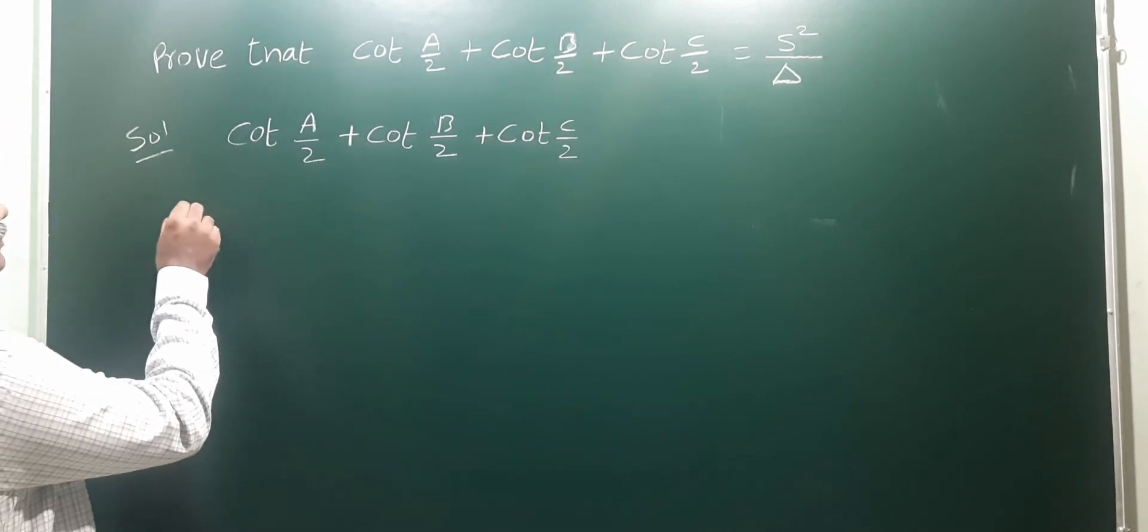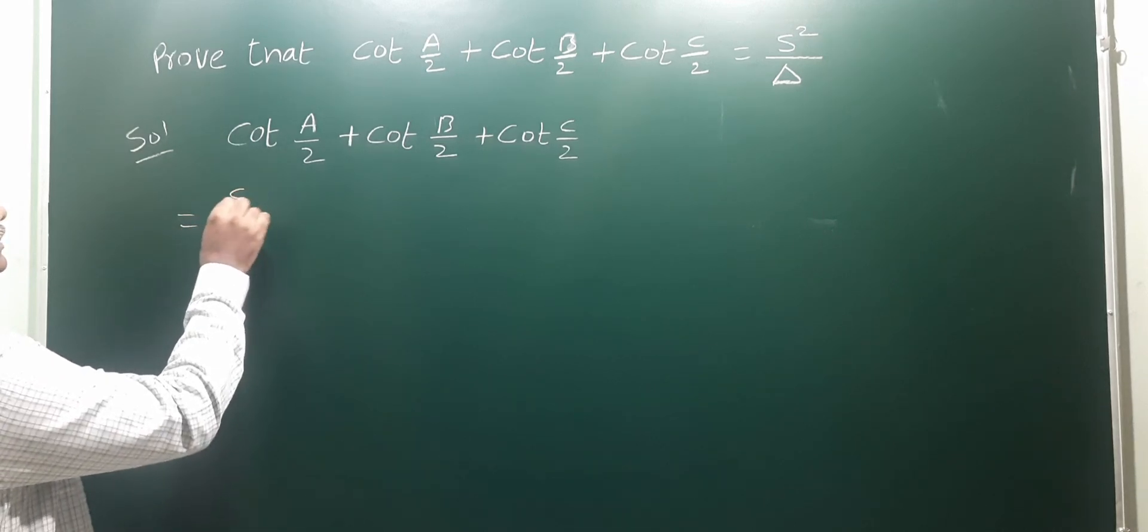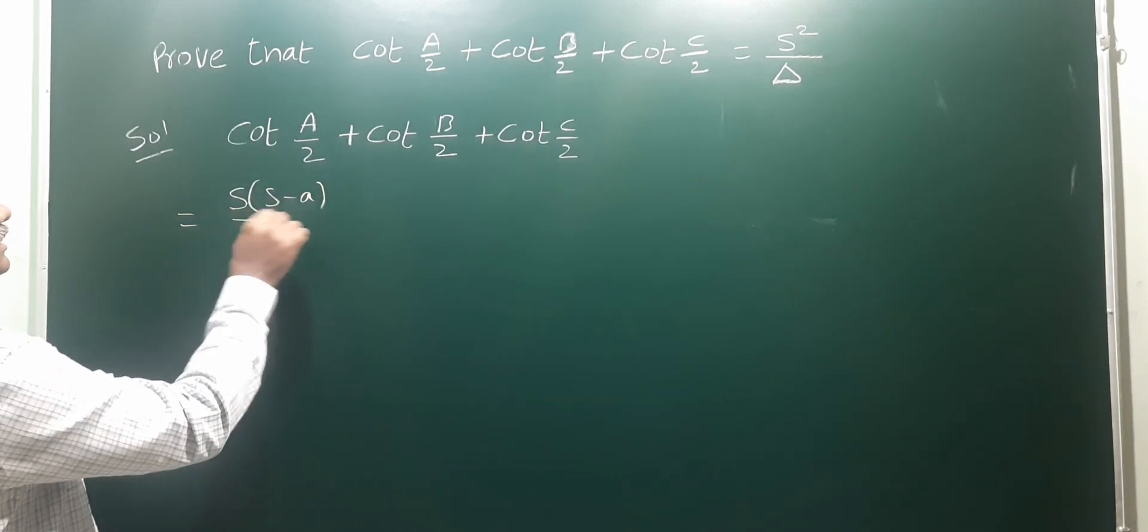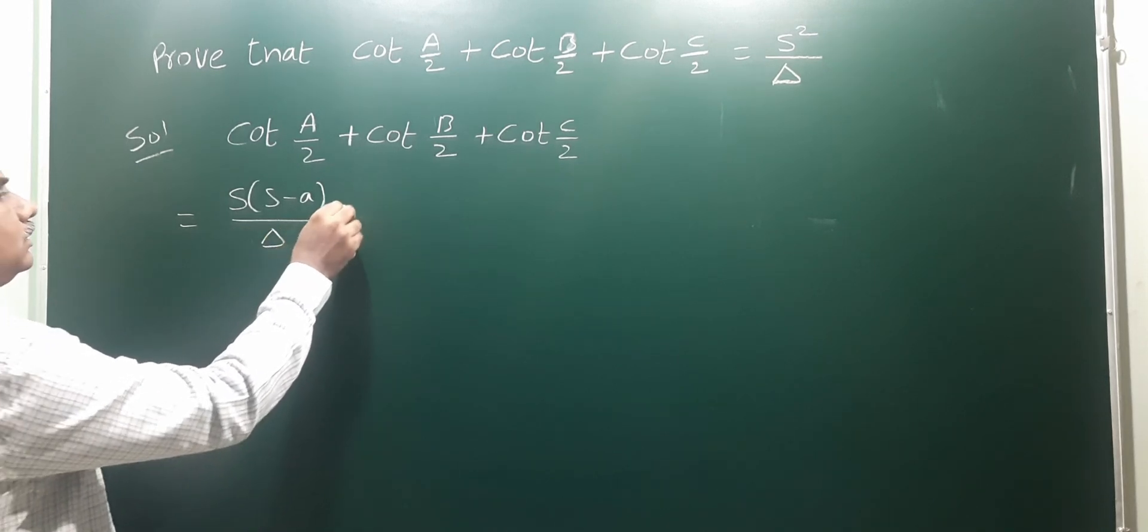Now substitute the formula. Cot A/2 means s(s-a)/Δ, plus cot B/2 means s(s-b)/Δ, plus cot C/2 means s(s-c)/Δ.